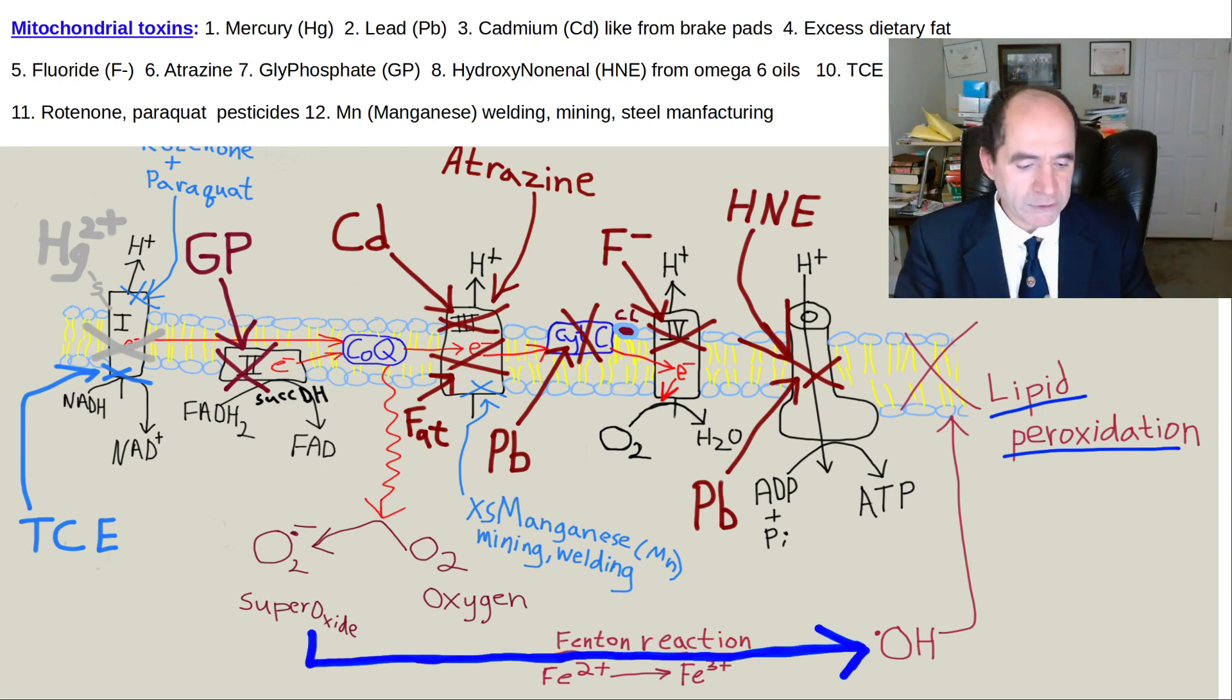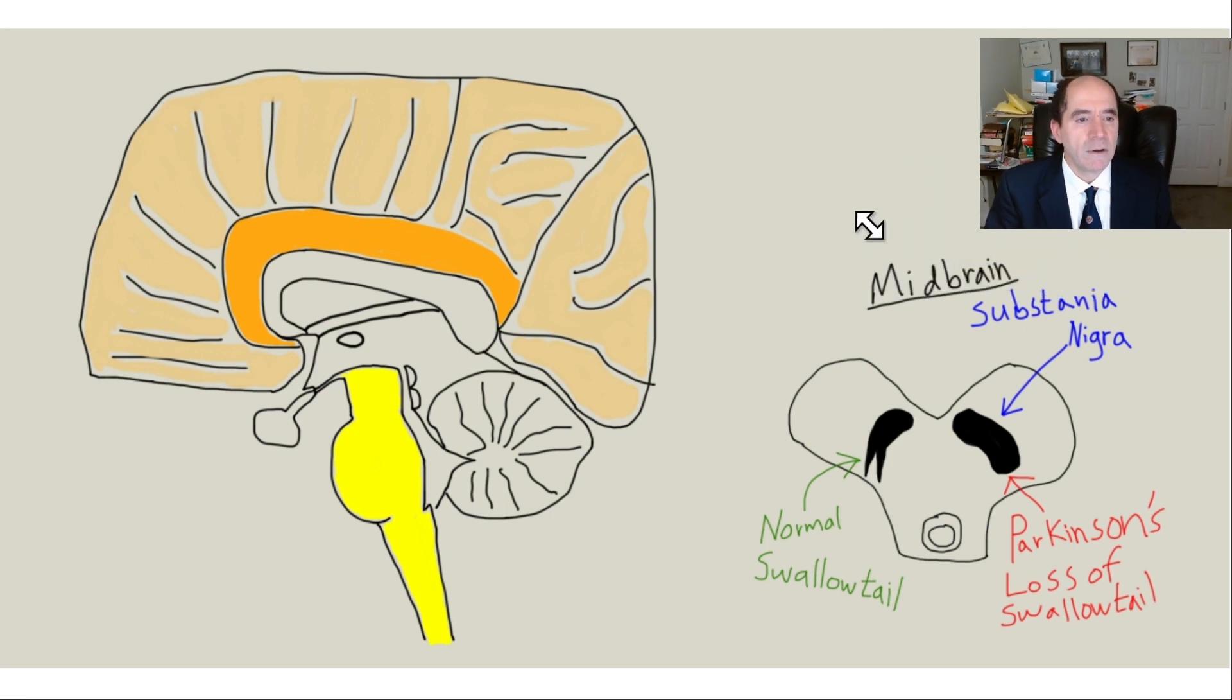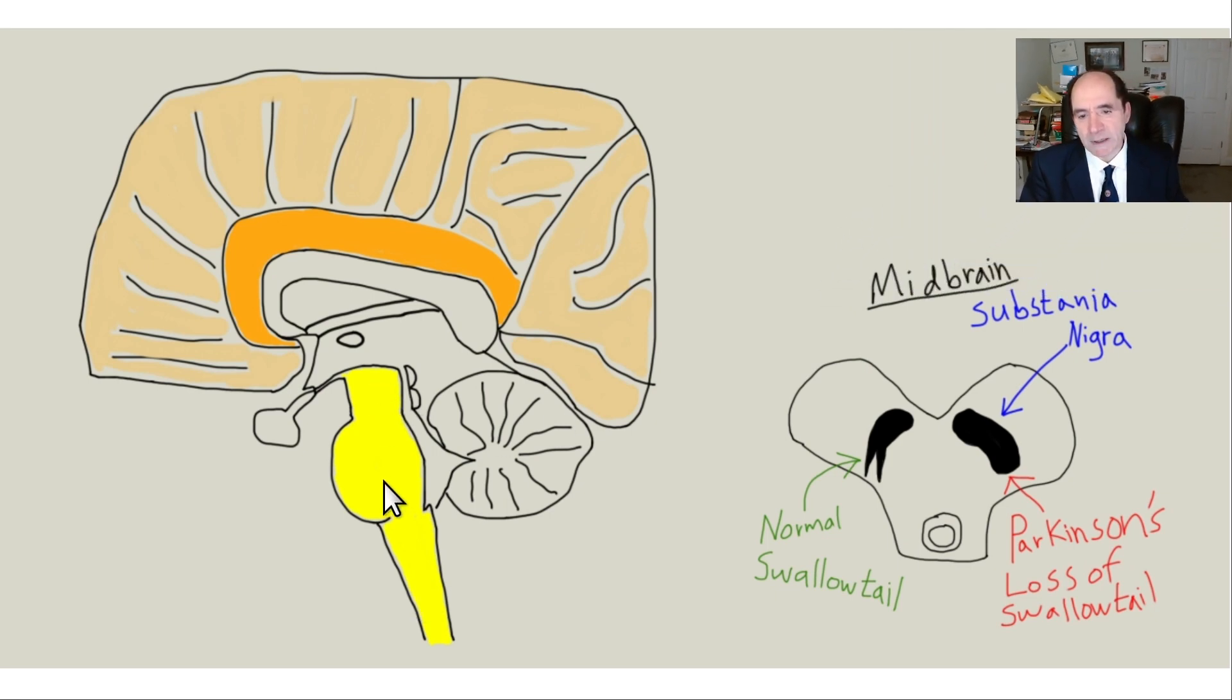We're going to focus in this talk on Parkinson's disease. Parkinson's disease especially affects this area in the brain called the substantia nigra. That's located in the midbrain. This is the midbrain here, here's your brainstem, the pons, the medulla, the cervical spinal cord. Up here in the midbrain, you've got this area called the substantia nigra. It normally has a tail like a swallow. That's the normal appearance. When you lose the swallow tail on MRI, that's an indicator of Parkinson's disease. You can accumulate iron in here, and that's associated with toxicity to the substantia nigra.